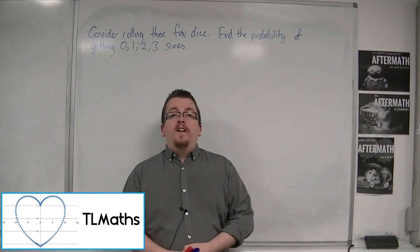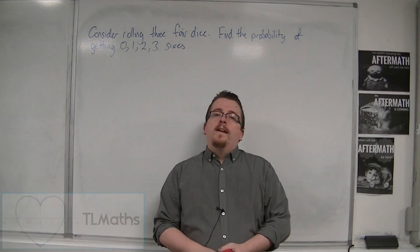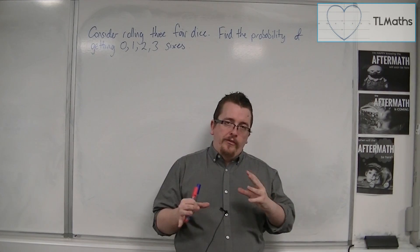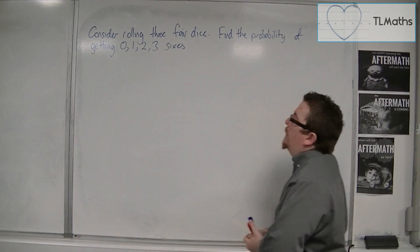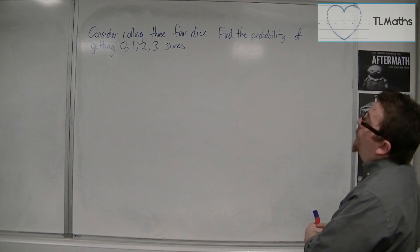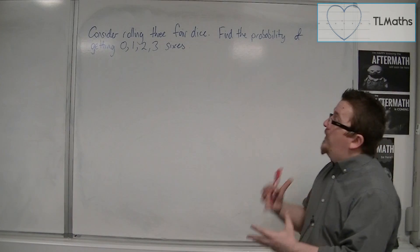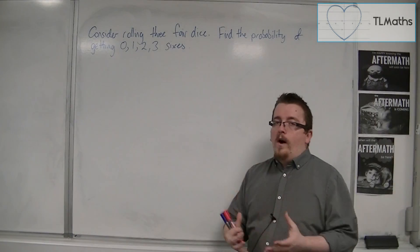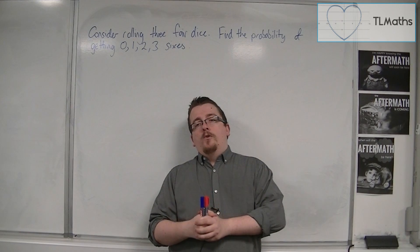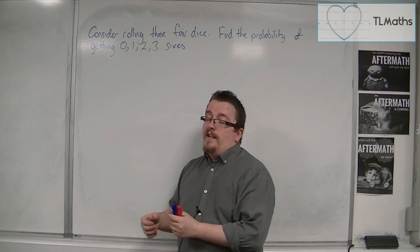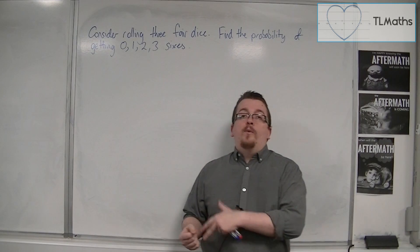In this section, we're going to be looking at the binomial distribution, and I'm going to introduce the concepts with an example. Consider rolling three fair dice. Find the probability of getting 0, 1, 2, or 3 sixes. We'll represent getting a 6 with a '6', and not getting a 6 with an 'n'.